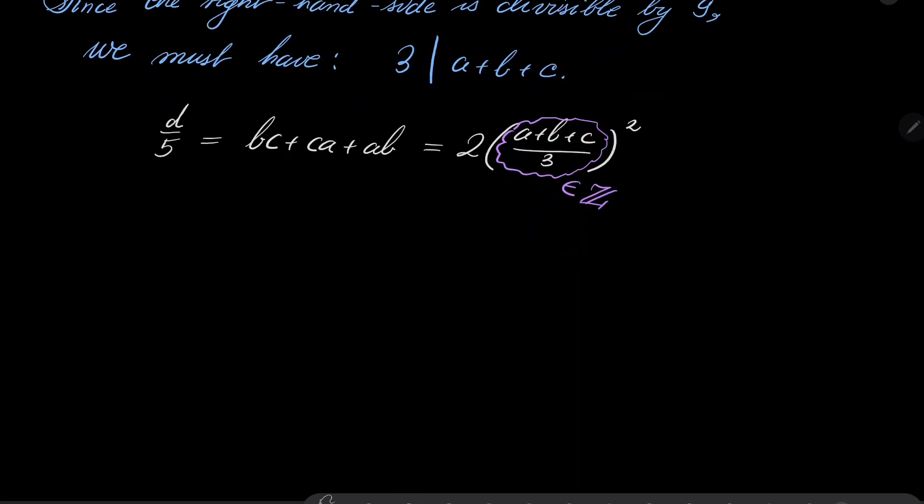So now let's multiply by 50. After multiplication by 50, we have 100(a + b + c)/3 squared. Of course, we multiply by 50, so I have to put 10 right here. So 10d = 10(a + b + c)/3, everything squared.